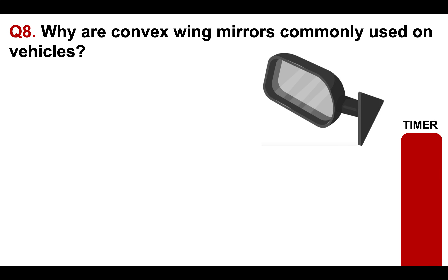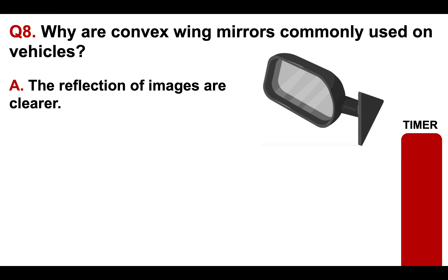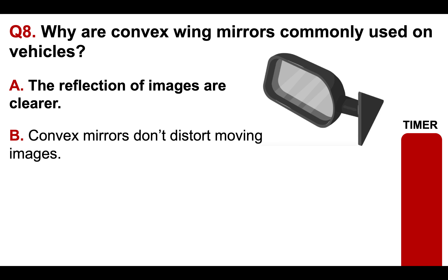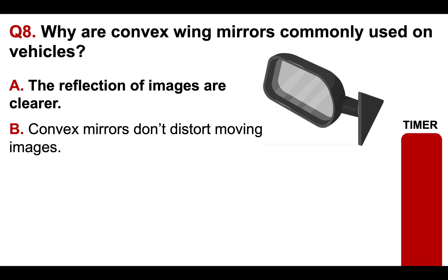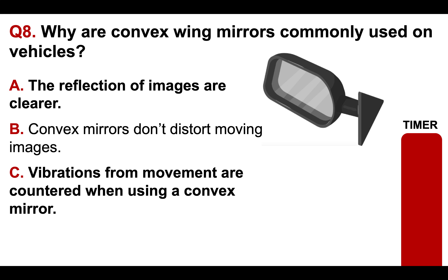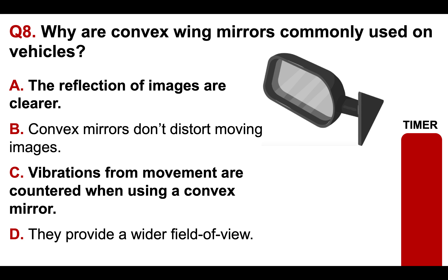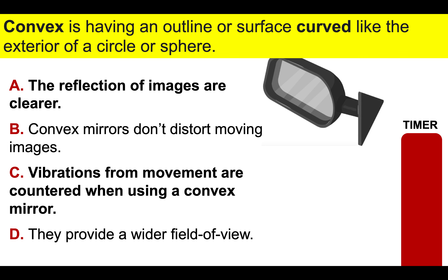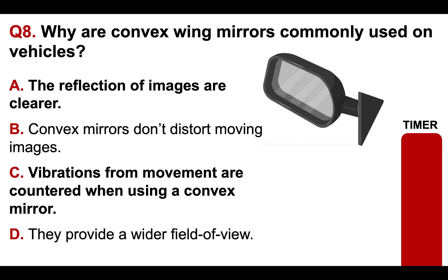Question eight: why are convex wing mirrors commonly used on vehicles? Is it A: the reflection of images are clearer? B: convex mirrors don't distort moving images? C: vibrations from movement are countered when using a convex mirror? Or D: they provide a wider field of view? Just to give you a tip — convex means having an outline or surface curved like the exterior of a circle or sphere. Put your answer to question eight in the comments section below.